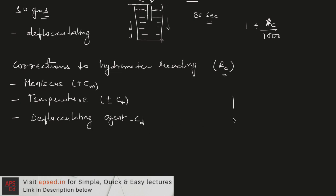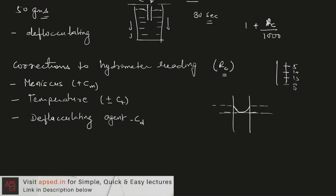When the hydrometer is inserted, a meniscus forms at the liquid surface. We should read at the bottom of the meniscus, but due to turbidity in the suspension this level is not visible, so we read at the top of the meniscus. Since the scale graduation increases in the downward direction (5, 10, 15, 20...), the actual reading at the bottom of the meniscus would be a higher value, so the meniscus correction is additive.